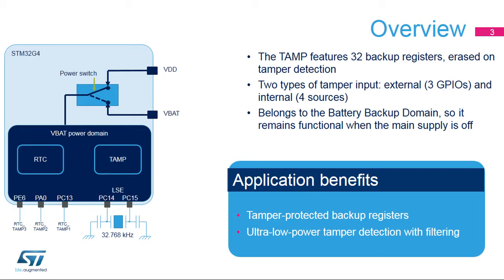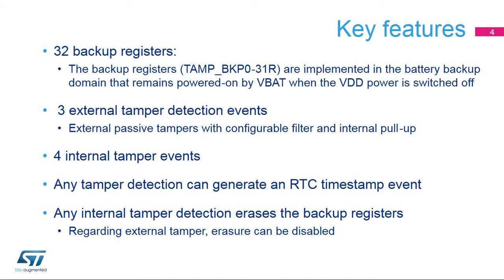The tamper detection is functional in low power modes when the VBAT domain is supplied by a backup battery. The anti-tamper circuitry includes ultra-low power digital filtering, avoiding false tamper detections. The key features of the TAMP are 128 bytes of backup registers split into 32 32-bit backup registers. These registers are preserved in all low power modes and in VBAT mode, and are erased when a tamper detection event occurs on any one of the three tamper pins or the four internal tamper events.